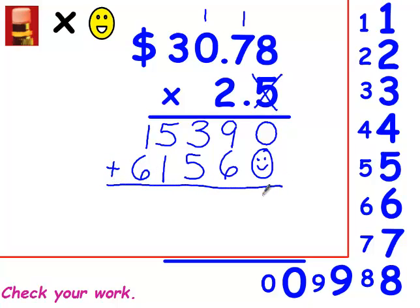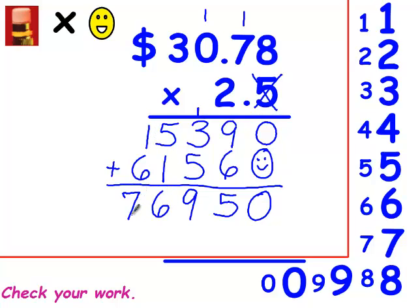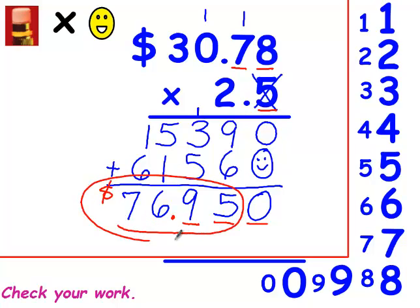I'm going to add these numbers together: 0, 15 — carry the 1 — 8 plus 1 is 9, then 6, then 7. Now I go up into the problem and count how many numbers are behind the decimal point, and make sure the same number are behind it in the answer. Your answer is $76.95.